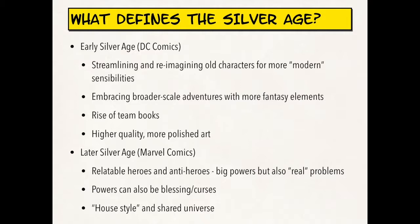The later Silver Age, defined by Marvel Comics, is known for its relatable heroes and anti-heroes. These characters have big powers but also real problems — a lot of their powers are both blessings and curses at the same time. So even though Spider-Man or The Thing now have these amazing powers, they're also causing trouble in their family lives or making them outcasts. Because of the small stable of artists, Marvel had a house style and a very clear shared universe. In Marvel it seemed much more cohesive and smaller in scale, since these characters hadn't really been around since the 1930s, and there was a strong sense of community and shared visual identity — in part because Jack Kirby drew about 80% of the books.